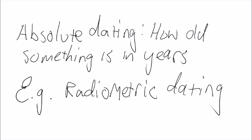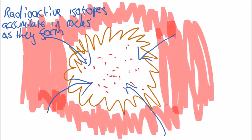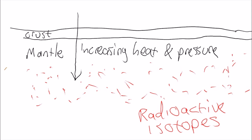The most common method of absolute dating of rocks is radiometric dating. To figure out how radiometric dating works, we're going to have to delve a little bit into chemistry and physics. When rocks are forming, they incorporate radioactive isotopes — things like uranium-206 and 207, carbon-14, or potassium-40.